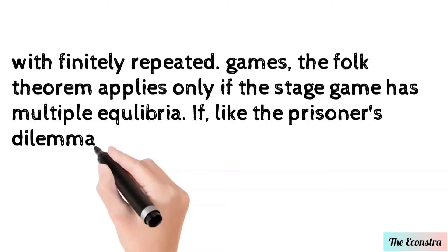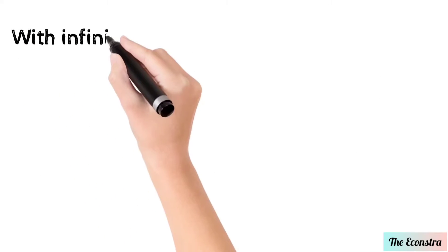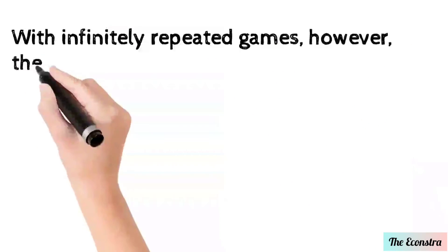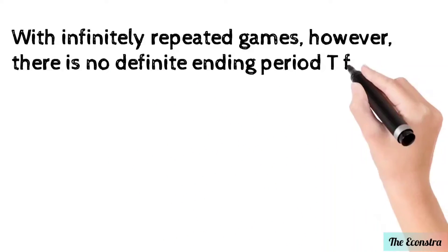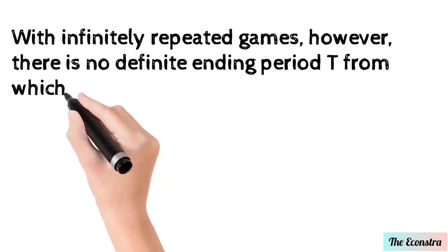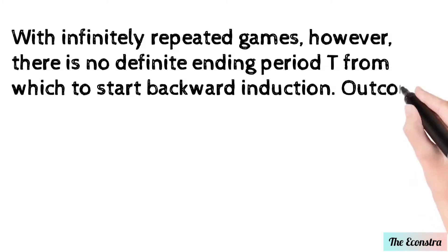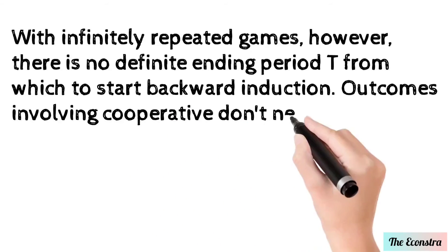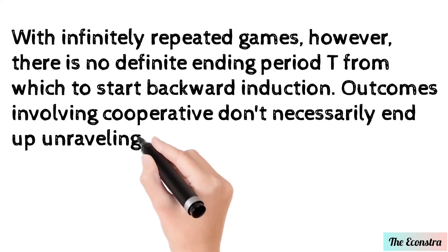If, like the prisoner's dilemma, the stage game has only one Nash equilibrium, infinitely repeated games, however, have no definite ending period T from which to start backward induction. Outcomes involving cooperation don't necessarily end up unraveling. The opposite may be the case, with essentially anything being possible in equilibrium of the infinitely repeated game.